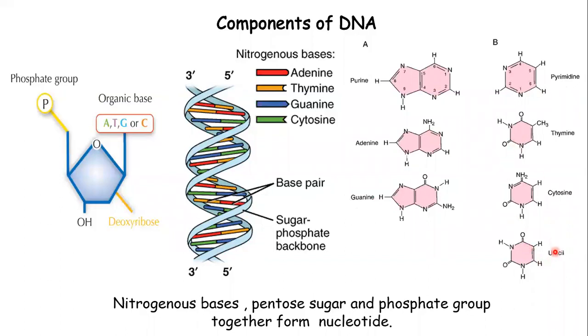In the case of RNA, thymine is replaced by uracil. On the basis of chemical nature, purines have a two-ring structure and pyrimidines have a one-ring structure.